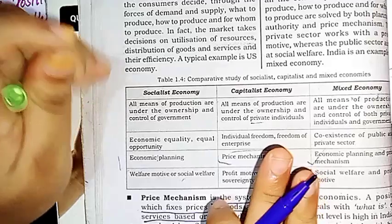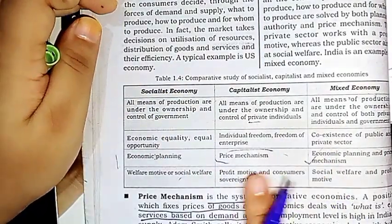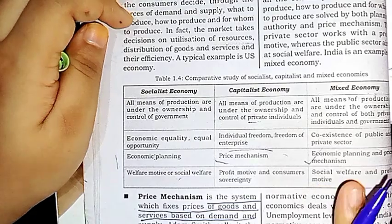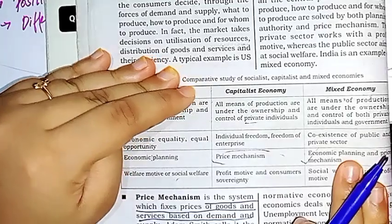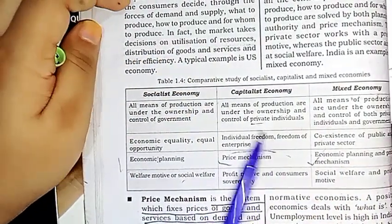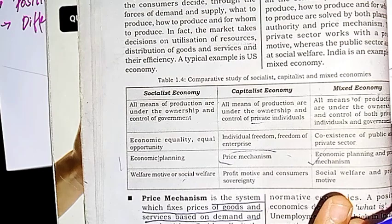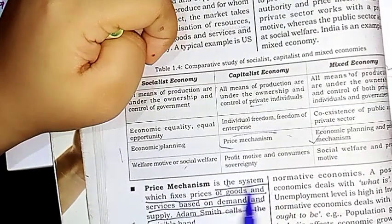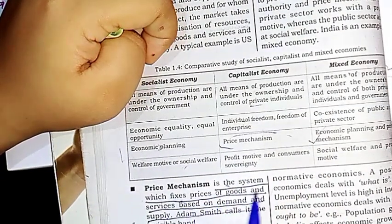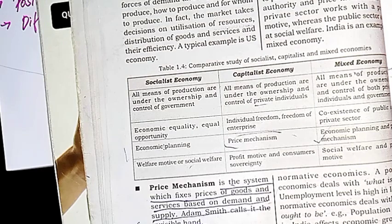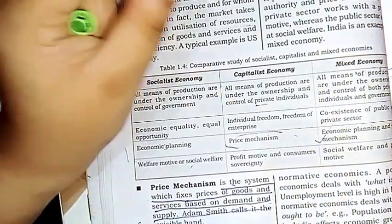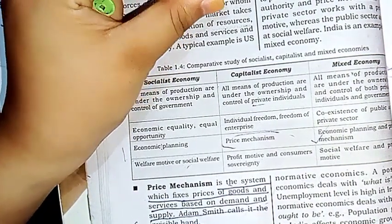The socialist economy focuses on social welfare, while the capitalist economy uses the price mechanism. The price mechanism is the system which determines the price of goods and services based on demand and supply. This concept is associated with Adam Smith's idea of the invisible hand.